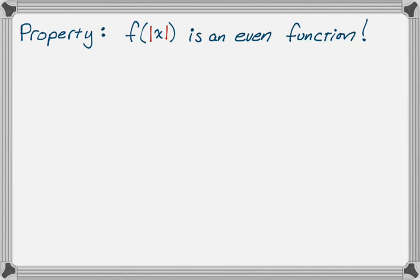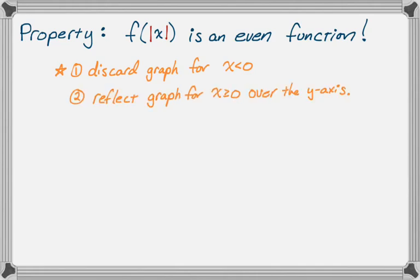What that means in terms of the graph is it's got to be an even function, and more importantly, it's only going to look like the positive part of the graph and the positive part reflected over the y-axis. So the first thing you do when creating the graph of f of the absolute value of x is you immediately discard the graph for x less than 0. Then you reflect the graph that's left — all the stuff to the right of 0 — over the y-axis, giving a symmetric graph. That allows us to calculate definite integrals based only on the right-hand side. We're going to do some examples because that's definitely the weirdest one.